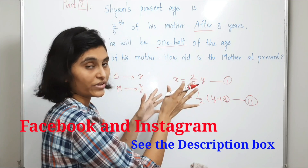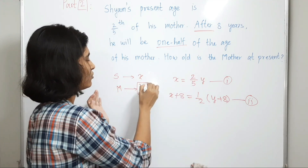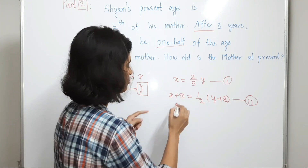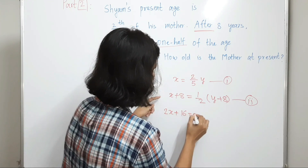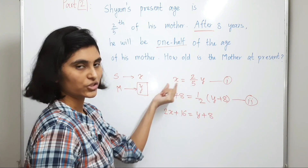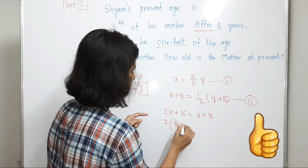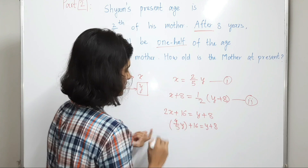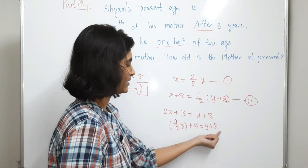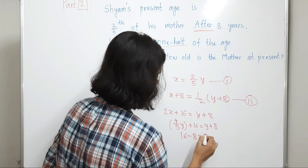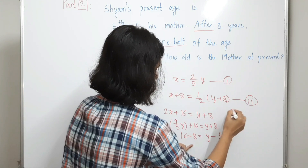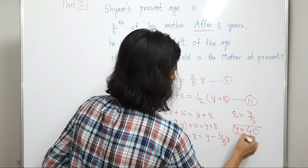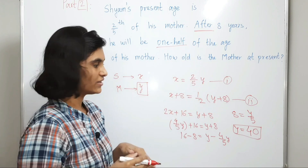Now we have two equations in two unknowns X and Y. Since we need to find Y (the mother's age), let's substitute the value of X from equation 1 into equation 2. Multiplying through by 2: 2X + 16 = Y + 8. Substituting X = (2/5)Y gives (4/5)Y + 16 = Y + 8. Rearranging: 16 − 8 = Y − (4/5)Y, so 8 = Y/5, therefore Y = 40. The present age of the mother is 40 years.